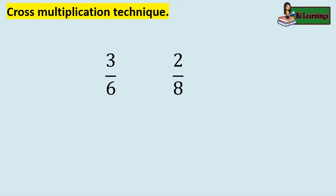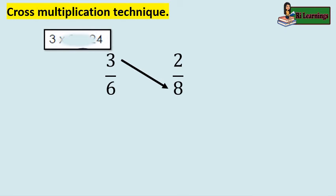We can also compare dissimilar fractions through the cross-multiplication technique. Multiply the denominator of the second fraction by the numerator of the first fraction: three times eight equals twenty-four. Put the product above this numerator. Next, multiply the denominator of the first fraction by the numerator of the second fraction: six times two equals twelve. Put the product above this numerator.